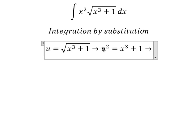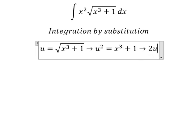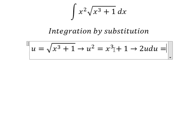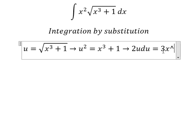Next, we need to do first derivative for both sides. First derivative of u squared, we have 2u du. First derivative of x to the power of 3, we have 3x squared dx.